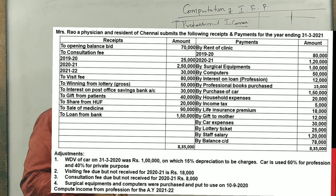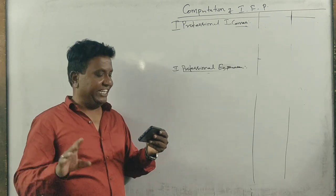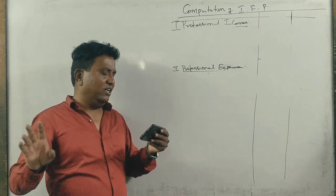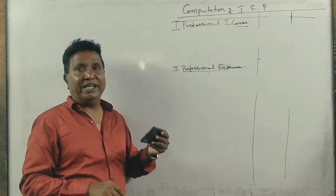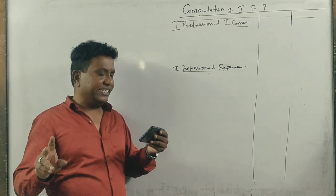Next is household expenses don't take it, income tax please don't take it, life insurance premium don't take it, gift to mother don't take it, car expenses depends on the adjustment, lottery ticket.